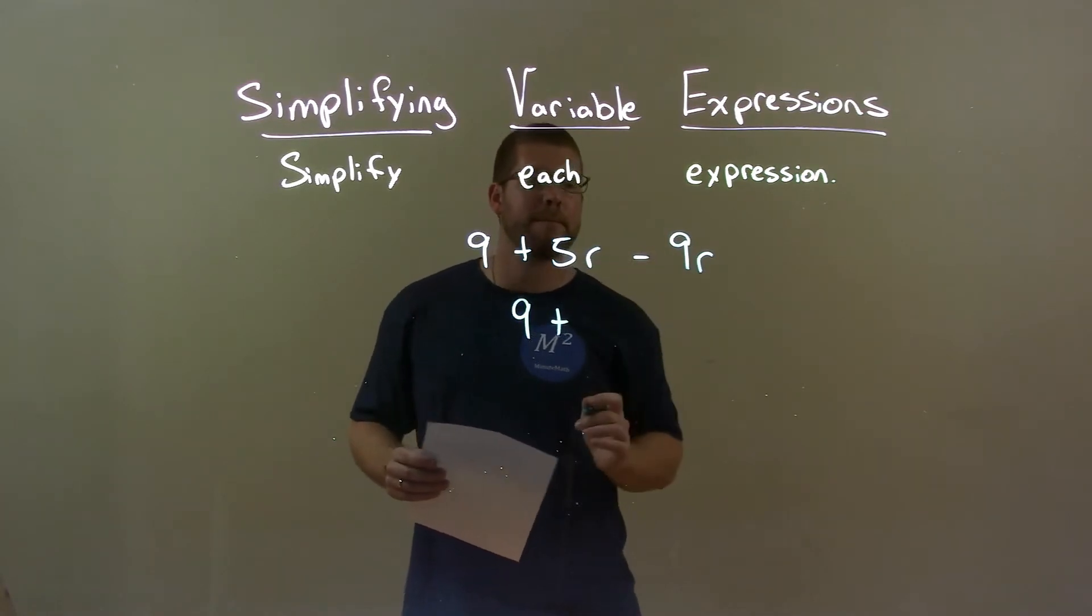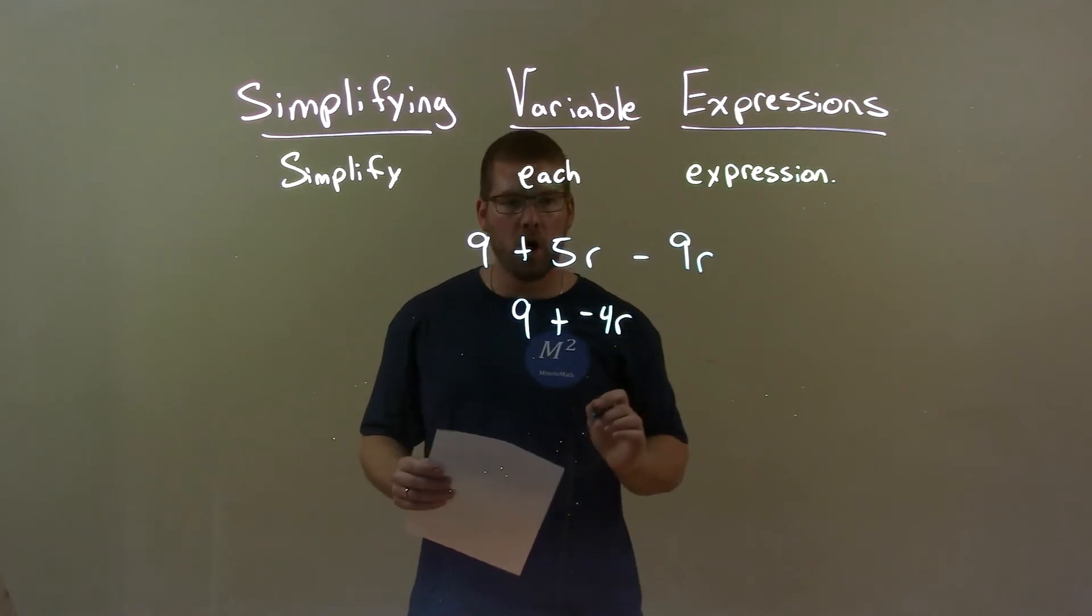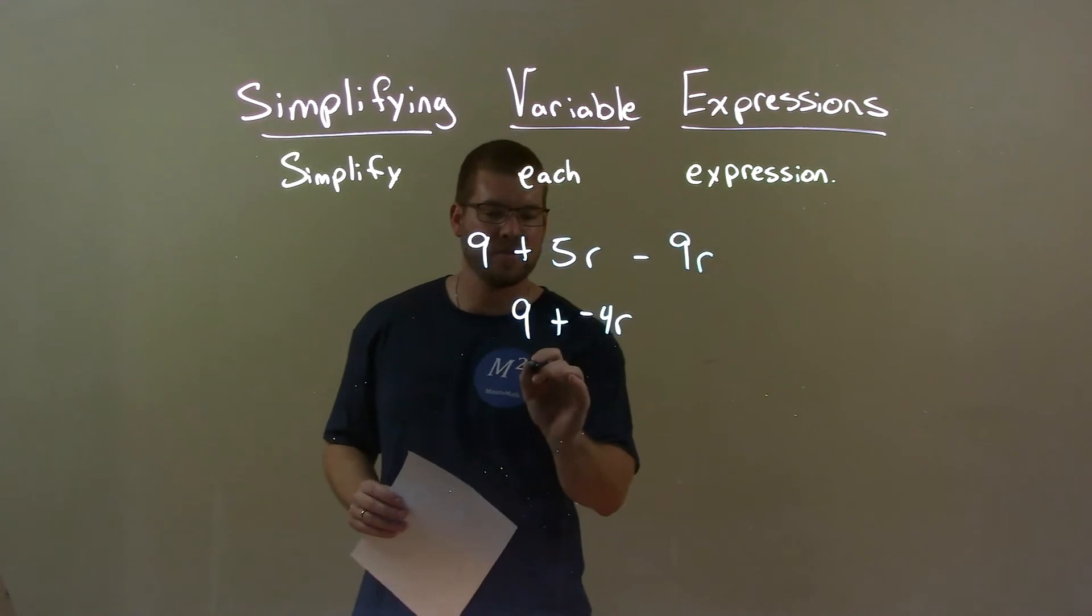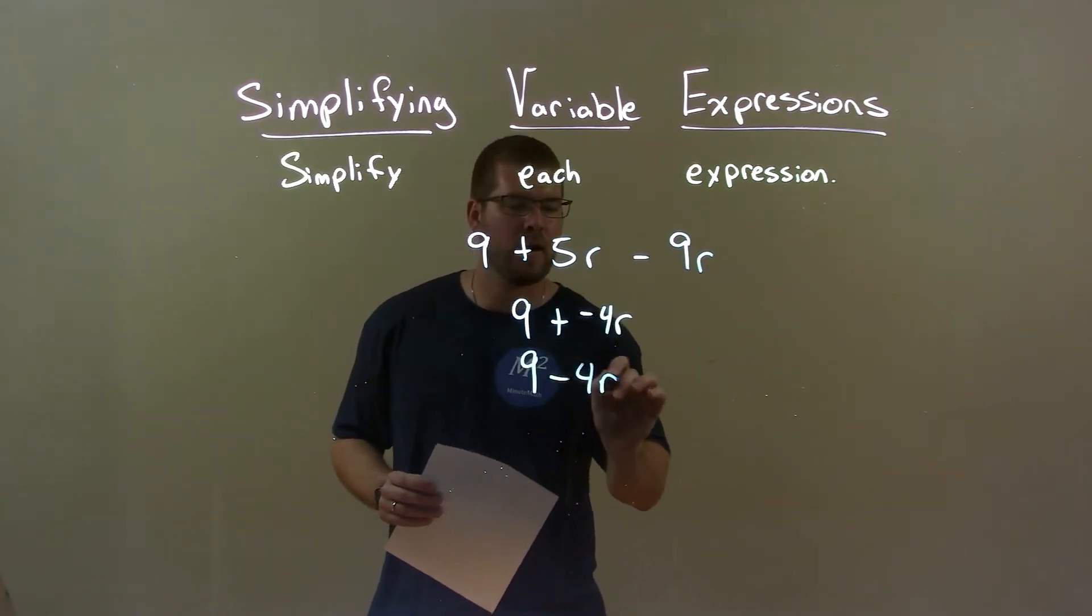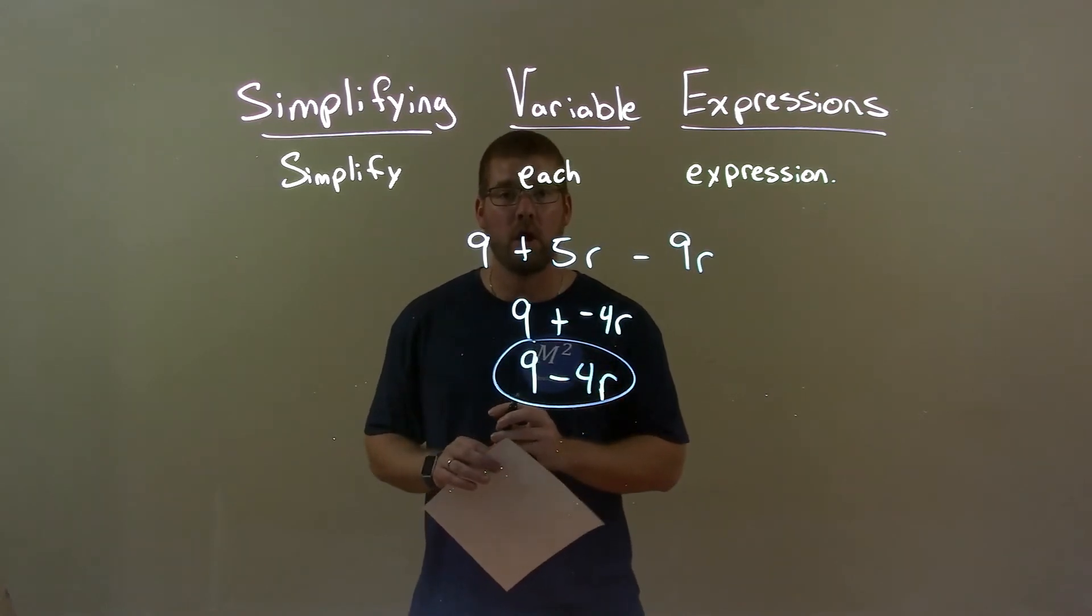We have 5r minus 9r is a negative 4r. So minus 4r here, right? Combine those two. Now, plus a negative is the same thing as subtraction. So we have 9 minus 4r and there we have our final answer. 9 minus 4r.